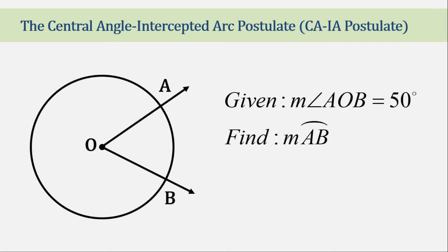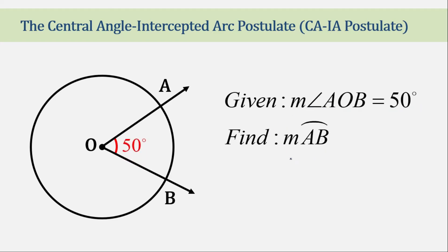For our first example, if angle AOB measures 30 degrees, then let's find the measure of arc AB. By the central angle intercepted arc postulate, arc AB is equivalent to the measure of angle AOB, so that is 30 degrees as well.